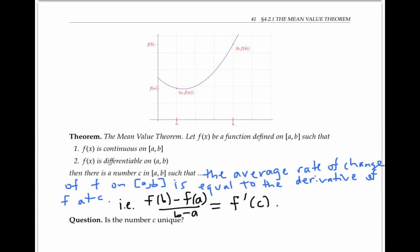On the graph, the average rate of change of F is the slope of the secant line. And so the mean value theorem says that there's some number C somewhere in between a and b, so that the slope of the secant line is exactly the same as the slope of the tangent line at that x value of C. The number C is not necessarily unique, so I encourage you to pause the video and see if you can draw a graph of a function where there's more than one C value that works.